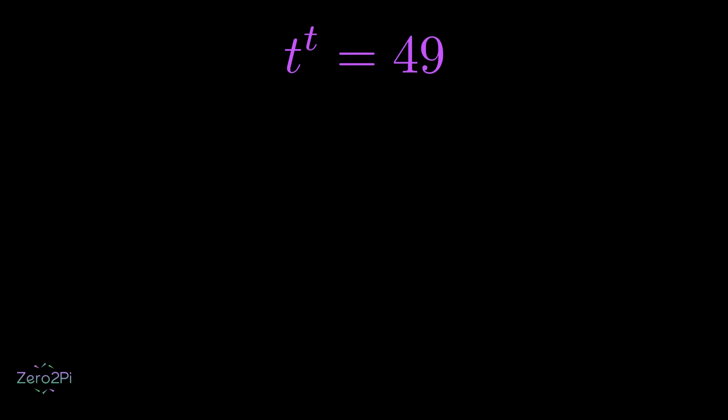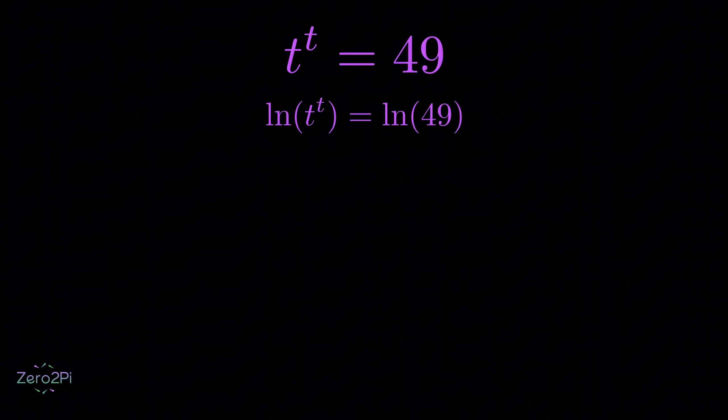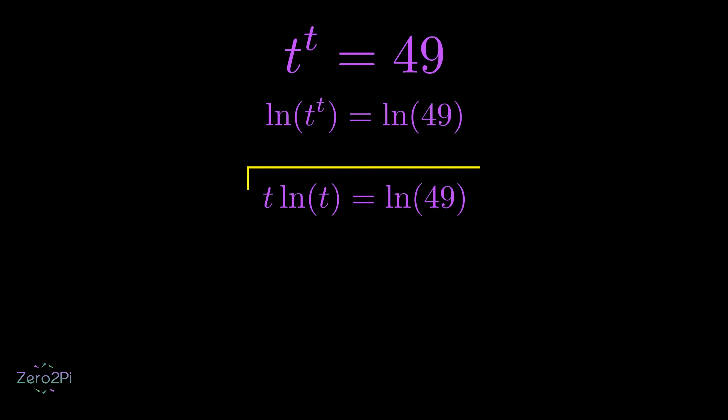The first step is to take the natural logarithm of both sides. Using the log rule, we can rewrite the equation as t times the natural log of t equals the natural log of 49. The problem is, from this point on, we can't solve it using any elementary functions. No basic algebra or calculus trick will work here.